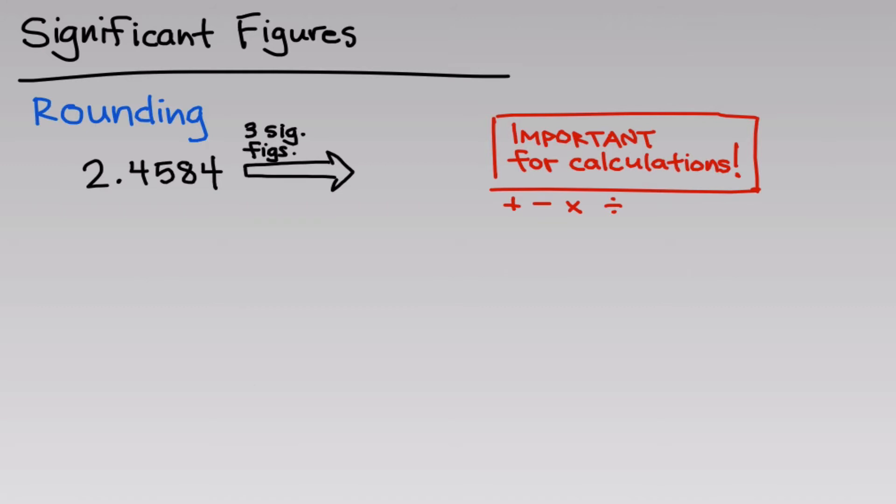So we often need to trim a longer number down to a smaller number of digits. For example, here you see 2.4584. Imagine we knew, applying the rules for calculations which we'll talk about later, that we needed to express this number to three significant figures.